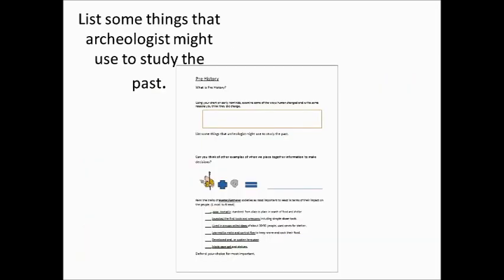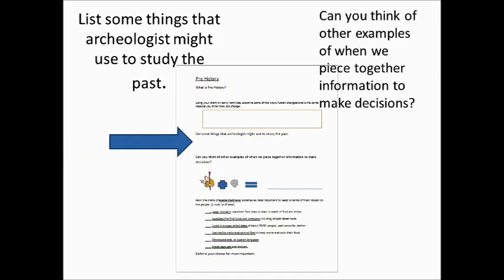On your notes, the first thing I would like you to do is list some of the things that archaeologists might study from the past. And then I want you to think of some other examples of when we piece together information to make decisions or investigate things. When are times when we piece together information or evidence to reach a conclusion?